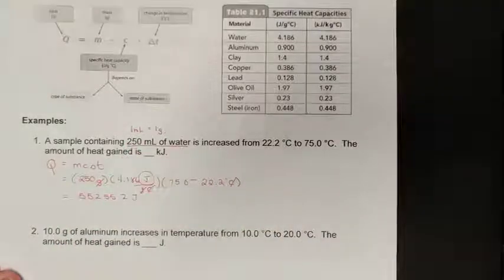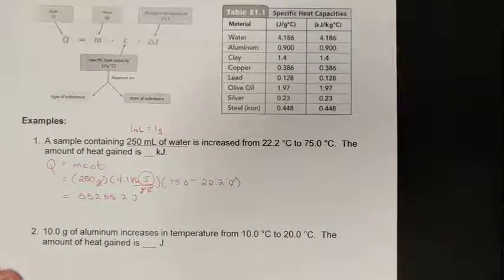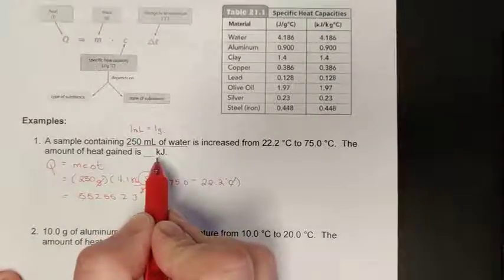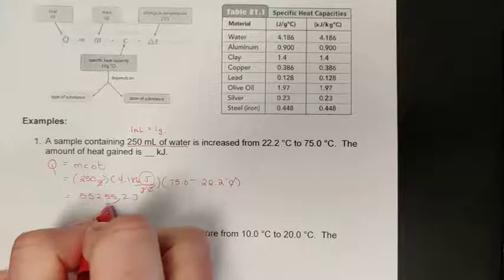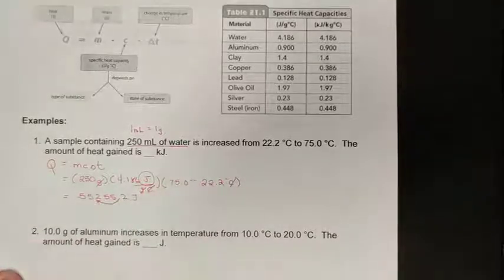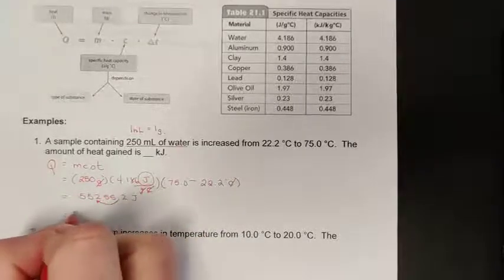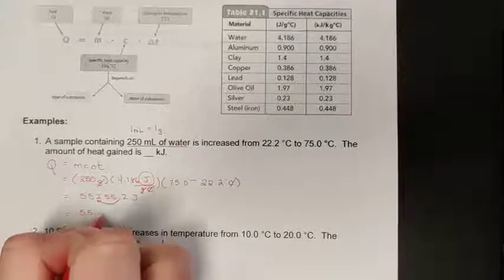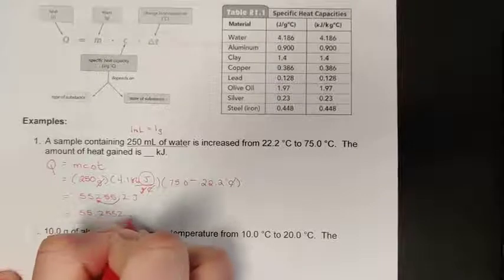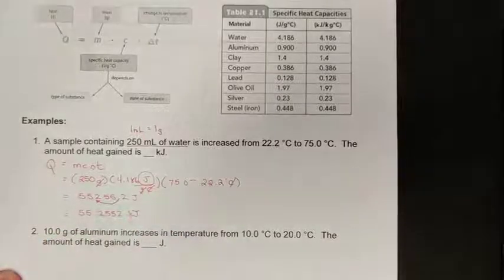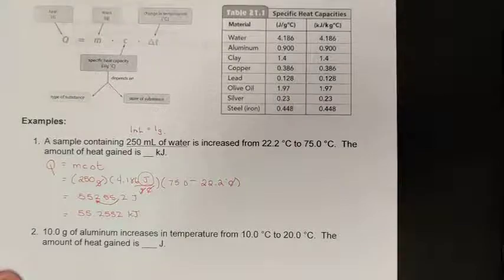Our units will just be joules because the grams cancel, the degrees C cancel, and we're just left with joules. We can still do our unit analysis there. We have to put this into a three sig dig limit, so we do have to do a couple of things. Number one, put this into kilojoules.